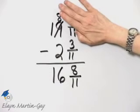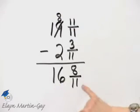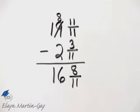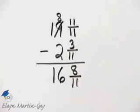So my estimate for an answer would be 17. And notice I have 16 and 8 elevenths. So that's certainly closer to 17 than 16. So in approximating I feel very comfortable with our answer. It is 16 and 8 elevenths.